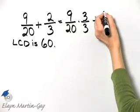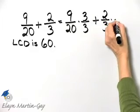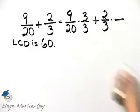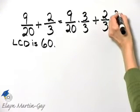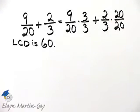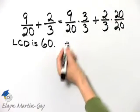The second fraction is two-thirds. Three times what number gives me sixty? Well, three times twenty, so I multiply by twenty over twenty, and let's see what we have.